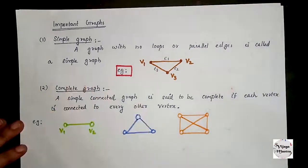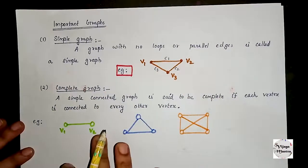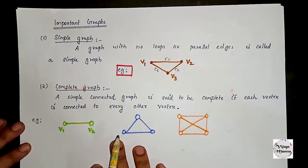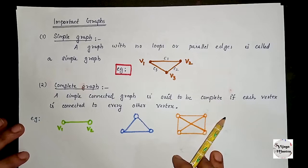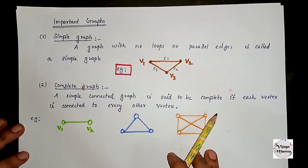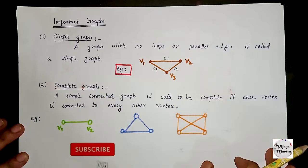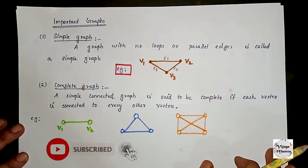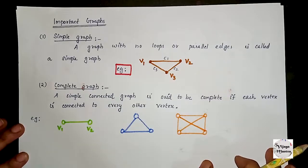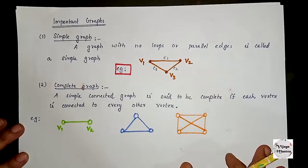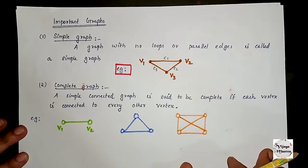A simple connected graph is said to be complete if each vertex is connected to every other vertex. A simple graph is called a complete graph if any two vertices are joined by an edge.